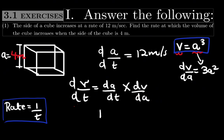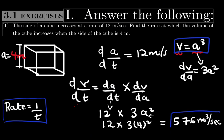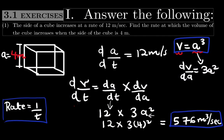dA over dt is given as 12, multiplied by dV over dA which is 3A squared. We substitute A with 4: 12 multiplied by 3 times 4 squared. Finally, dV over dt equals 576 meter cubed per second. The unit is meter cubed per second because the unit of volume is meter cubed and the unit of time is second.